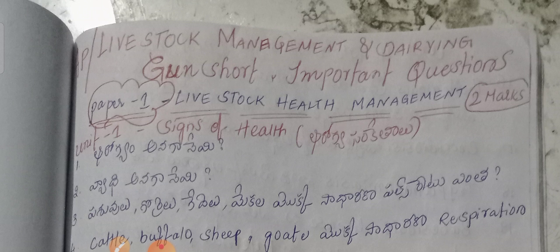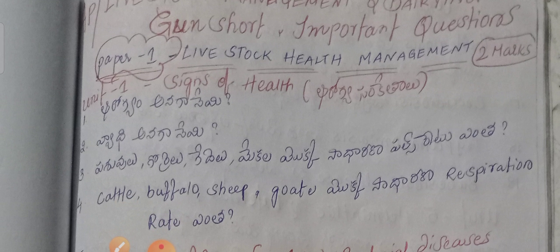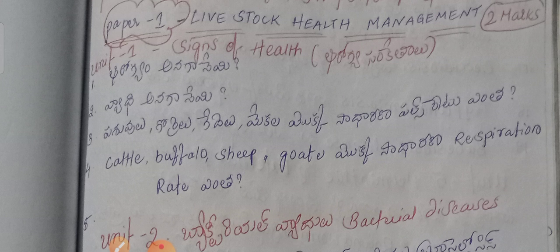The second question is about what is disease. Regarding pulse rate: cattle pulse rate is 60–70 beats per minute. Buffalo pulse rate is 40–60 beats per minute. Sheep pulse rate is 70–80 beats per minute. Goat pulse rate is 70–80 beats per minute.